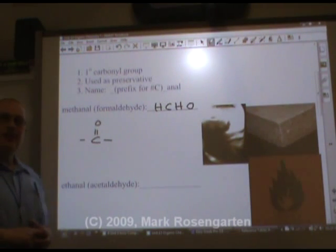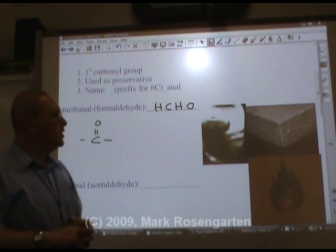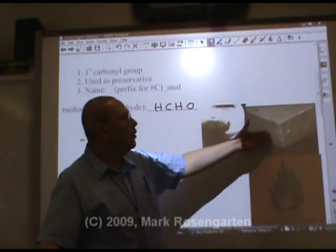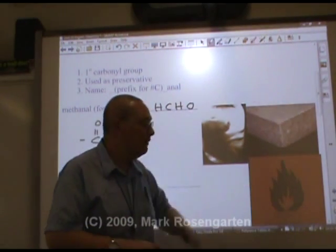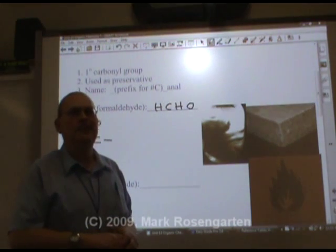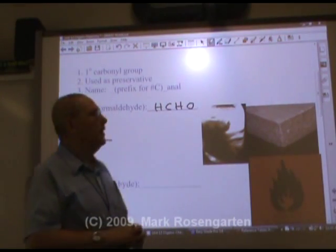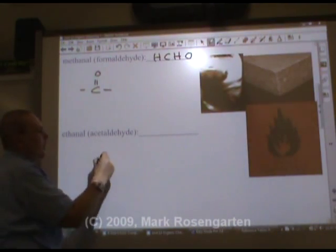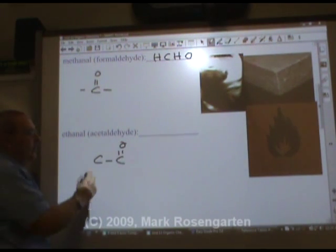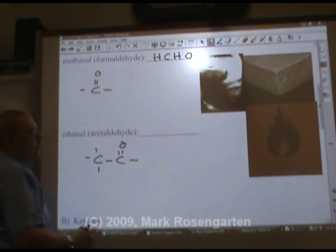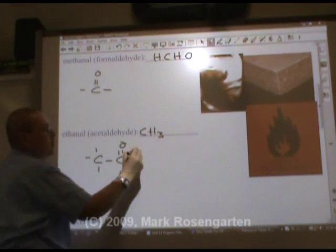Formaldehyde is used not just as a preservative for dead organisms, but also in the glue that holds particle board and plywood together. But you've got to be careful — not only is it highly flammable, it's also highly poisonous. So please don't make a cook fire with particle board or plywood. Ethanal would have two carbons and it would be an aldehyde: CH3-CHO.